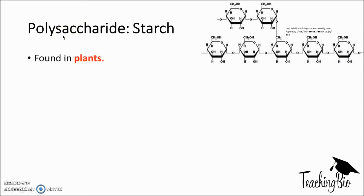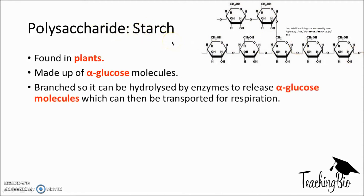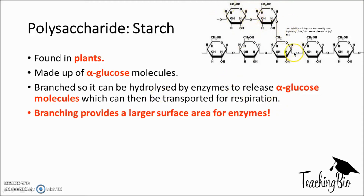Moving on to polysaccharides - many monosaccharides joined together. Starch is found in plants and is made up of alpha glucose molecules, with many alpha glucose molecules joining together to form starch. Starch is branched, which means it can be hydrolyzed by enzymes to release alpha glucose molecules, which can be used for respiration. The branching provides a larger surface area for enzymes such as salivary amylase, allowing hydrolysis of the glycosidic bond at a quicker rate to produce glucose for respiration.